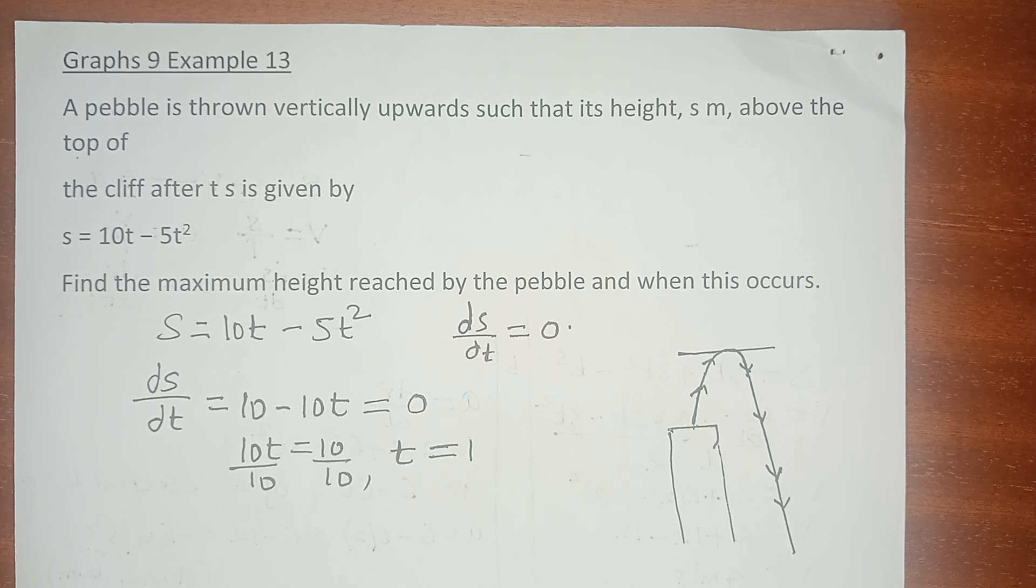Now let us talk about that maximum height. The maximum height is s = 10t - 5t². What is the height? We have to substitute in the equation when t = 1 to get the maximum height. Therefore s = 10 × 1 - 5 × 1² which is easily 10 - 5.